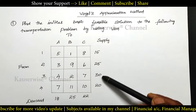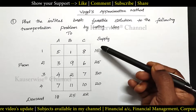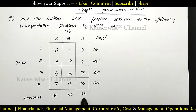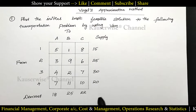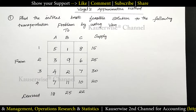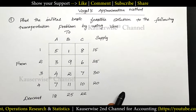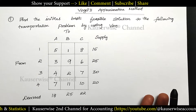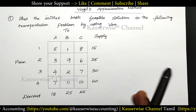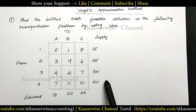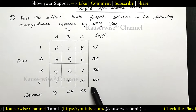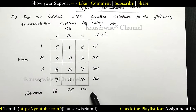Why? Because just check the supply total and demand total. Supply total is 90. Now check the demand total: 18 plus 25 plus 22, which gives 65. So supply is 90 and demand total is 65 — this is unbalanced. The first step is we need to convert the unbalanced into a balanced transportation problem. For that we need to add either a dummy column or dummy row according to the problem. In this problem, supply is more than demand, so we need to add one extra dummy column to make it a balanced transportation problem.